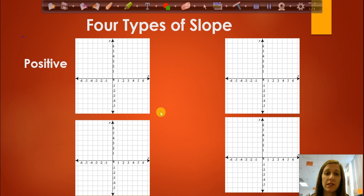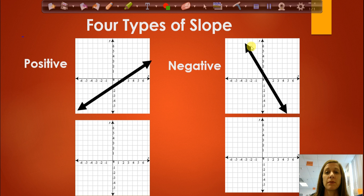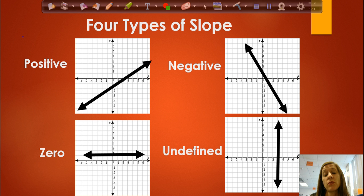First we have positive slopes. Those would be lines that rise as we go from left to right. We have negative slopes. These would be the types of lines that decline as we go from left to right. We have a zero slope which is just a horizontal line. And then we have an undefined slope which is a slope of a vertical line.